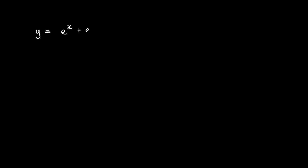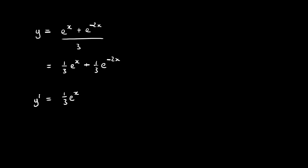Let's say we have y equals e to the power of x plus e to the power of minus 2x, all divided by 3. The best thing to do is rewrite this as a third e to the power of x plus a third e to the power of minus 2x, and then differentiate those two elements. Differentiating e to the x gives e to the x. Differentiating e to the minus 2x, we differentiate the power to get negative 2, giving negative 2 e to the minus 2x. So simplified, we get a third e to the x minus two thirds e to the minus 2x.